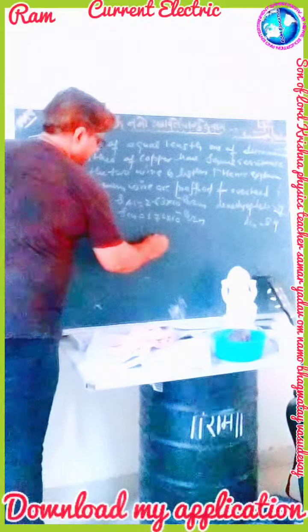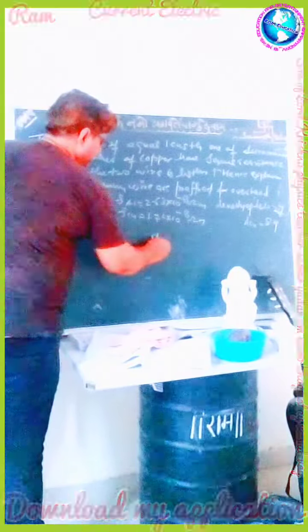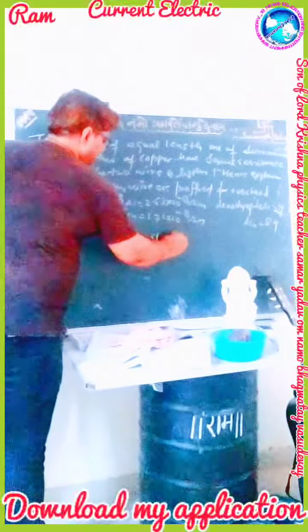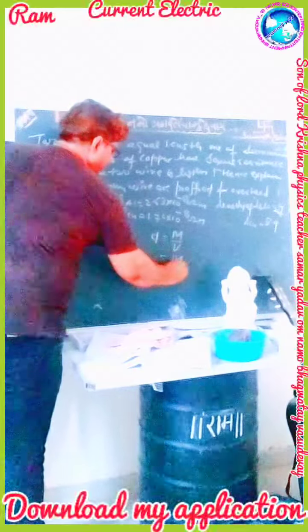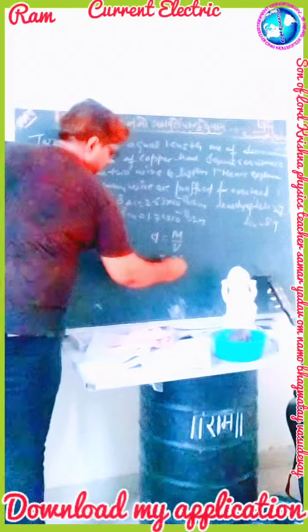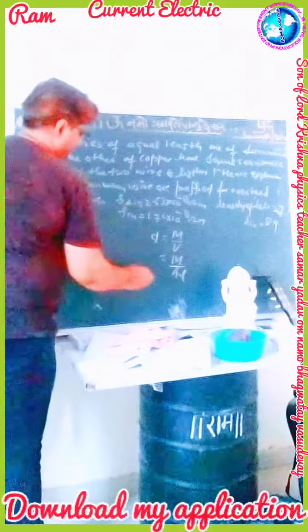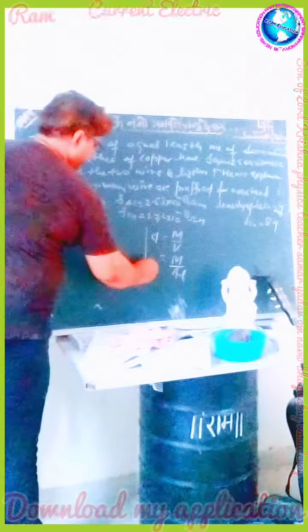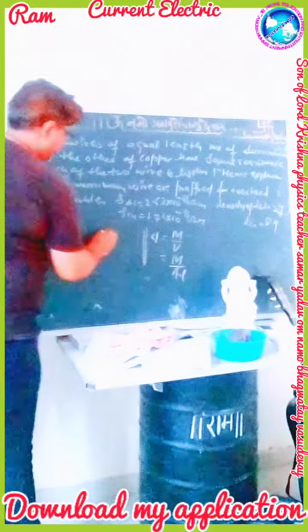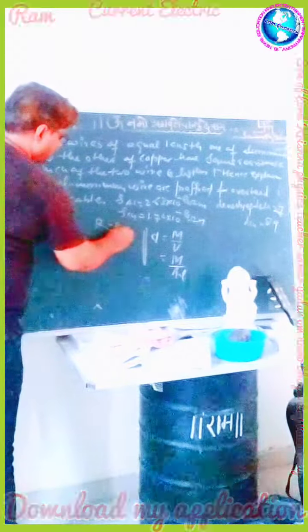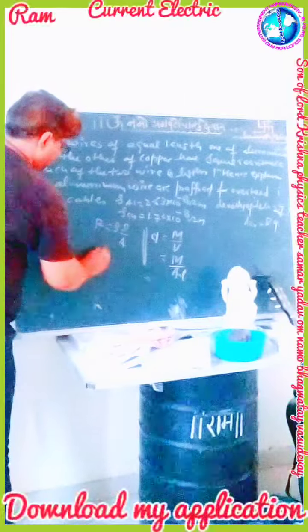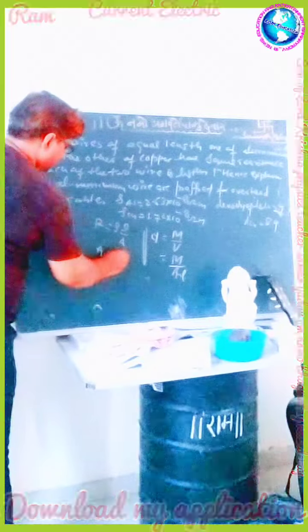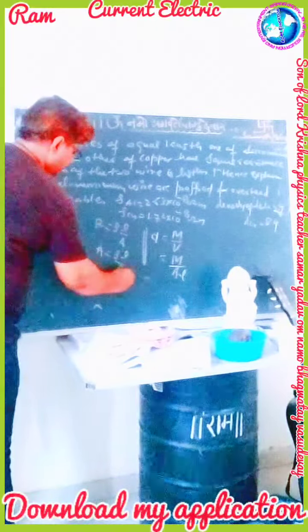We know that density D is equal to mass upon volume, which is equal to M upon A into L. We also know that R is equal to rho·L upon A. Therefore, A is equal to rho·L upon R.